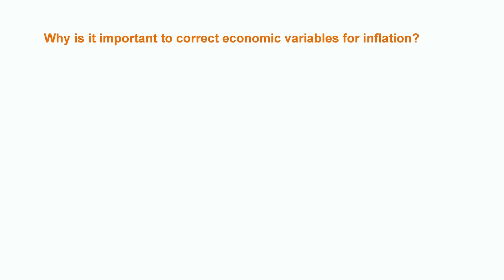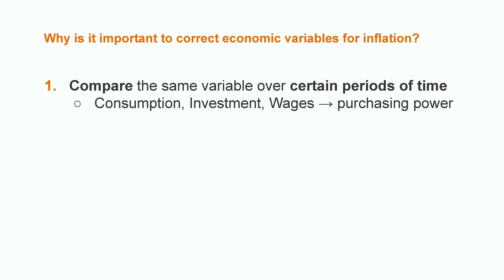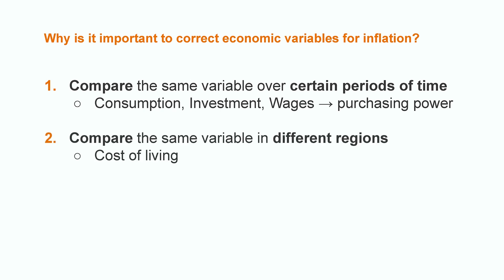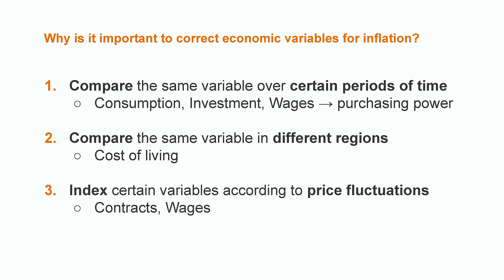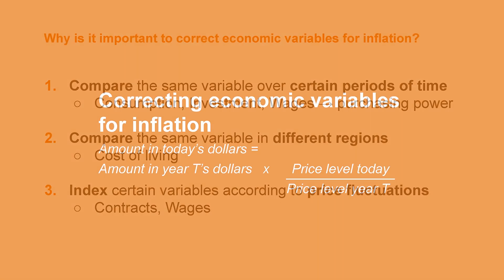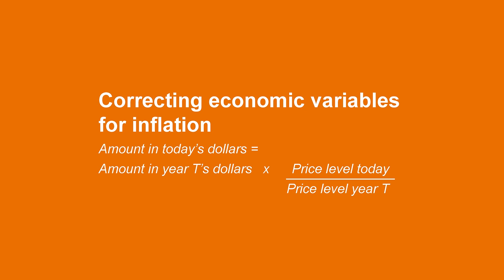So why is it important to correct economic variables for inflation? We have already seen that this helps us compare the same variable over periods of time or different regions. This illustrates the effect of inflation on purchasing power as well as the cost of living. But also, it allows for other variables to be updated or indexed — for example, contracts' wages can be indexed in order not to lose their value. So, how can we use CPI for making these calculations? What we want to express is economic variables in today's dollars, or express a variable taken today in another period's dollars.